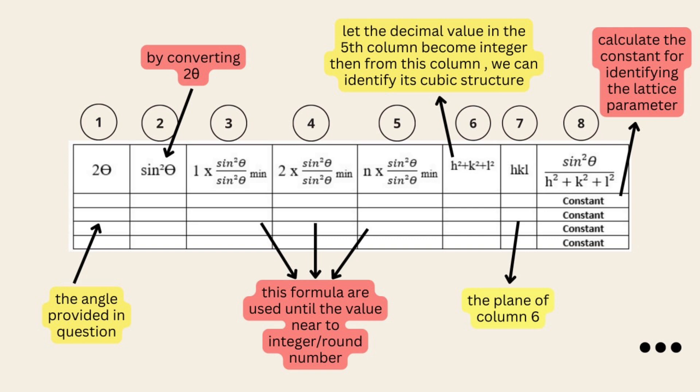Next, choose the equation result that gives h squared plus k squared plus l squared as an integer and speculate on hkl.